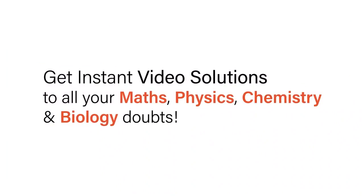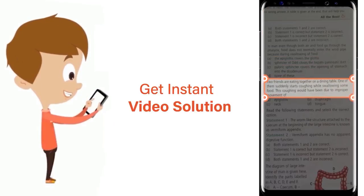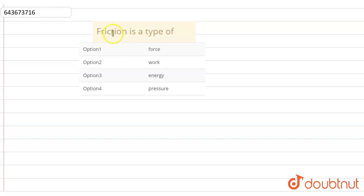With Doubtnet get instant video solutions to all your maths, physics, chemistry and biology doubts. Just click the image of the question, crop the question and get instant video solution. Download Doubtnet app today. Hello everyone, the question is we have to find the correct option from the four given options.